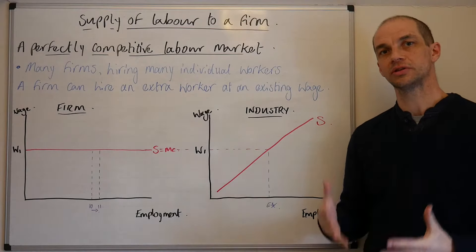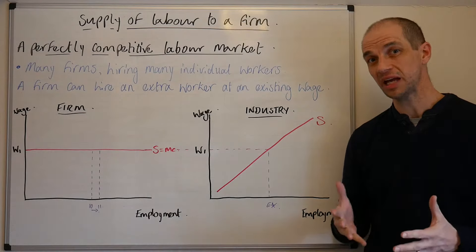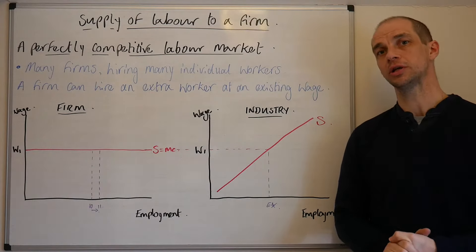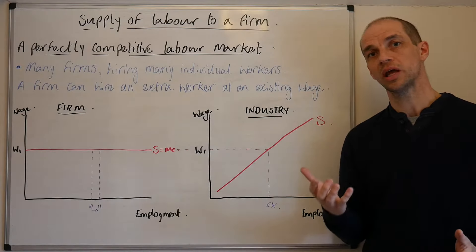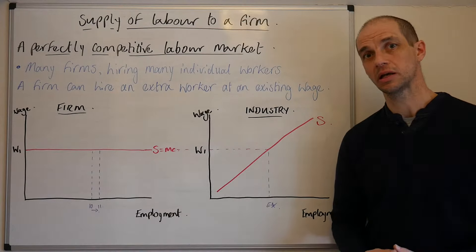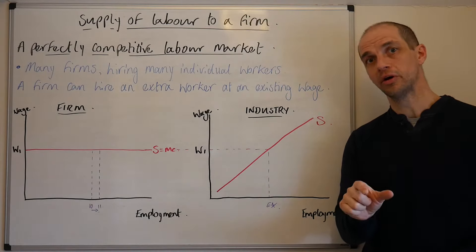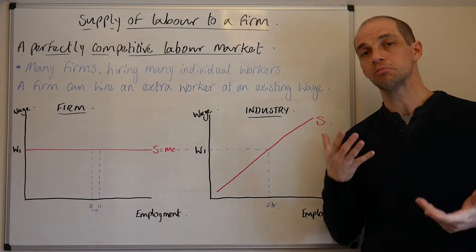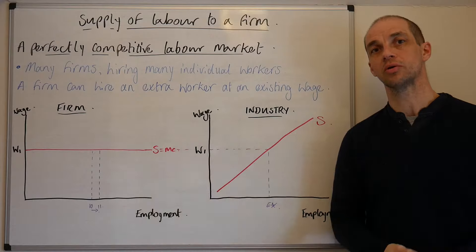Hi everyone. Let's have a look at the supply curve of labour for a firm in a perfectly competitive labour market. You may remember that when it came to perfect competition in the theory of the firm, we saw a market with many buyers and many sellers. We see those same characteristics in a perfectly competitive labour market — many buyers of labour, i.e. the firms, and many sellers of labour, i.e. the employees, who are selling their labour and their time to go and work for a firm.